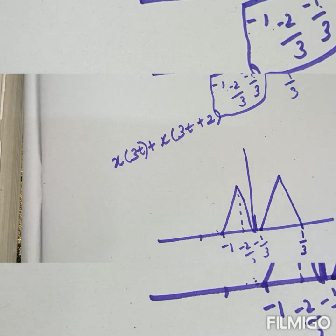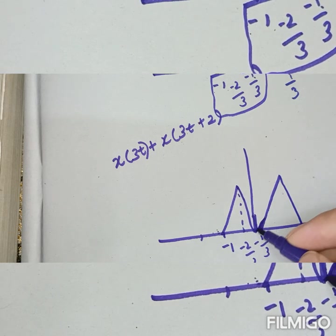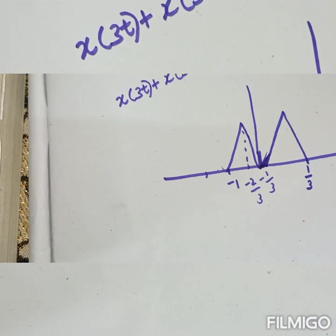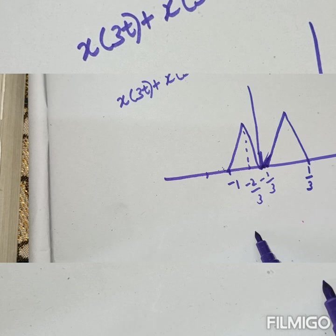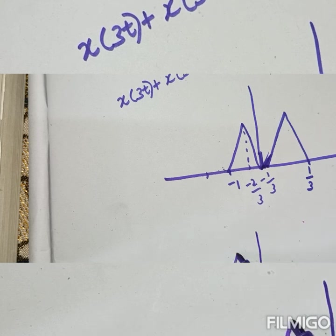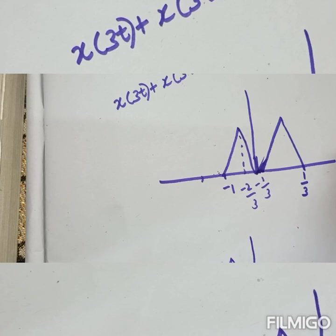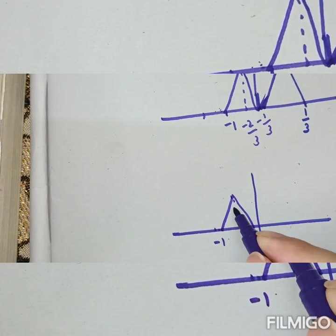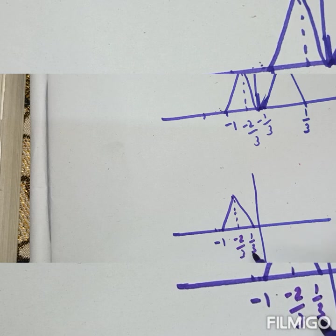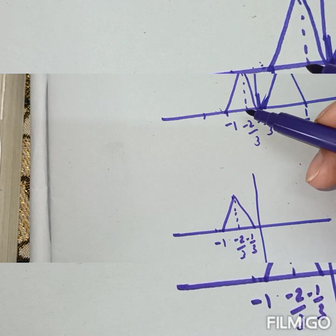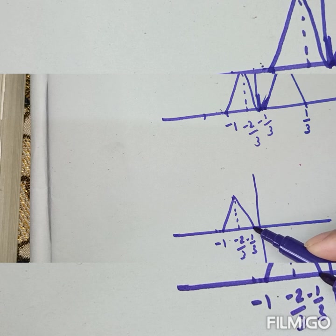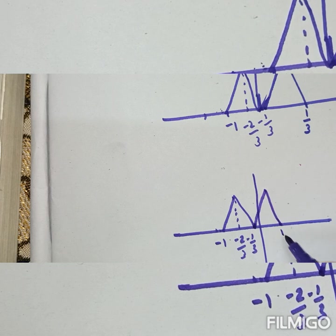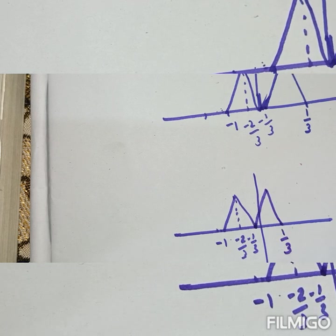Let me show this more clearly. The combined signal starts from minus 1, passes through minus 2 by 3 and minus 1 by 3, and then continues to 1 by 3. You are going to join the signal and bring it to 1 by 3.